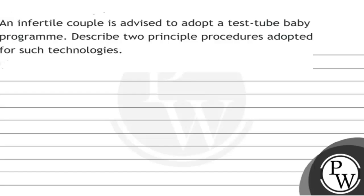Hello, let's read this question. The question says, an infertile couple is advised to adopt a test tube baby program. Describe two principal procedures which are adopted for such technologies.